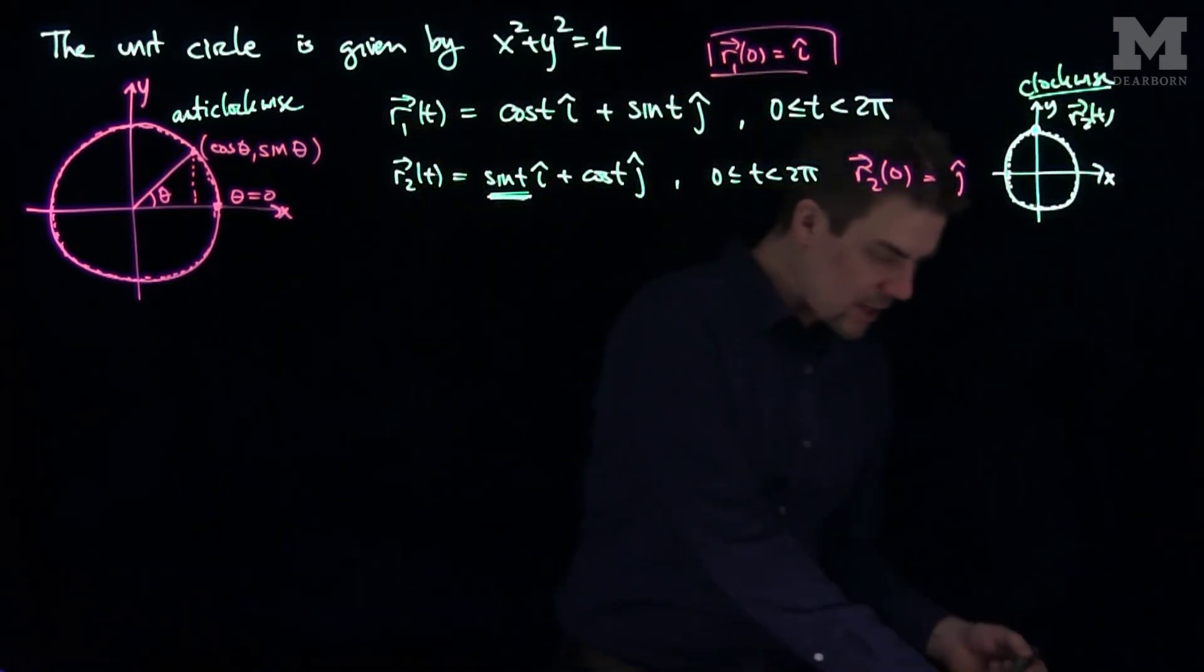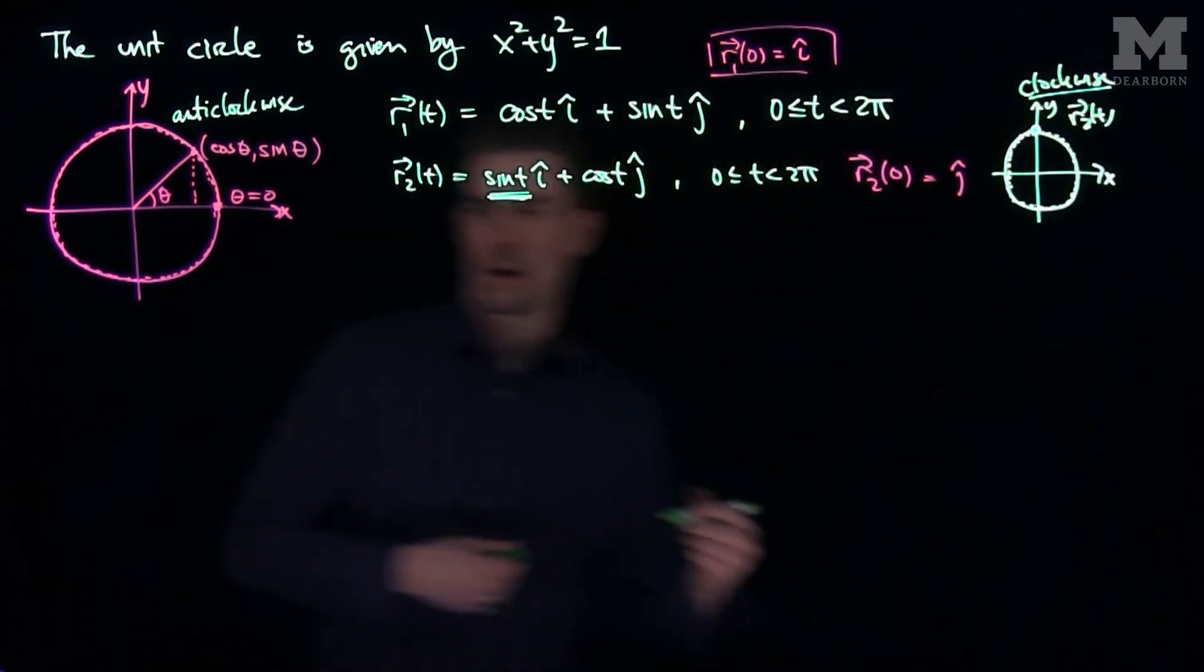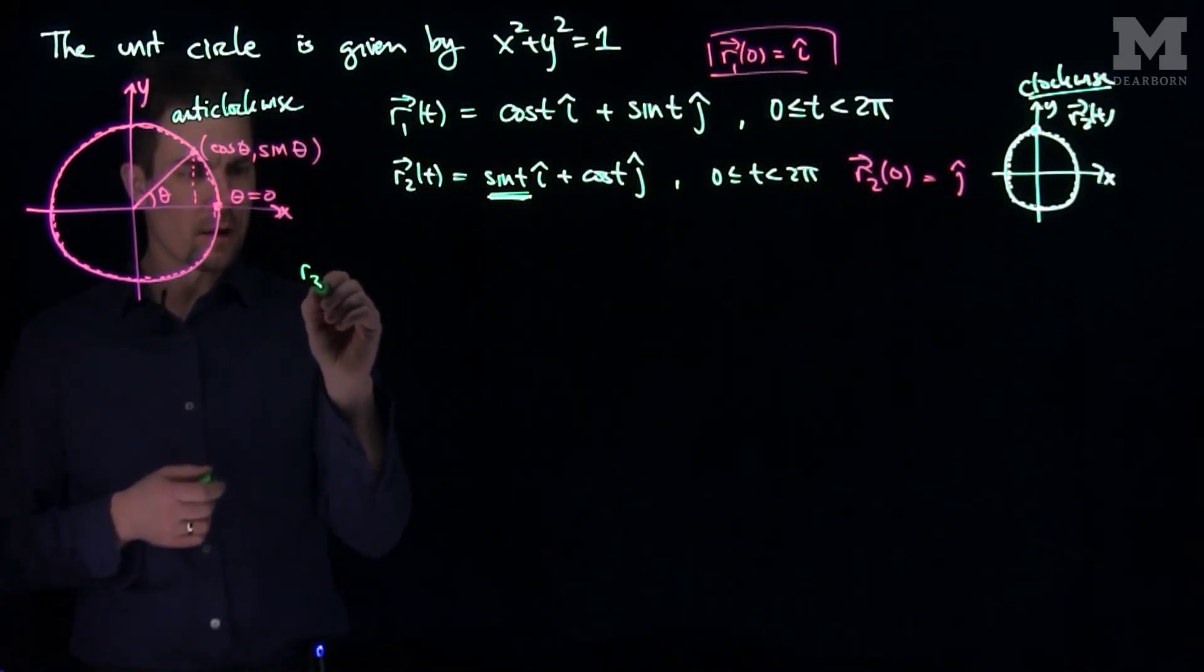So we can see from this that there's many ways to parameterize the unit circle, so let's write a few more down. We can also consider, for example, r3(t).